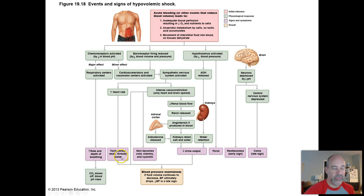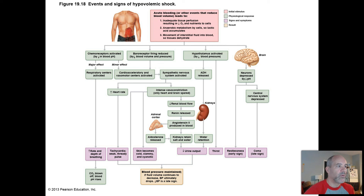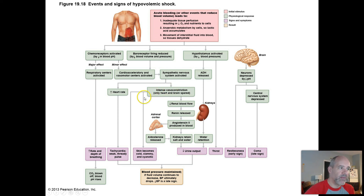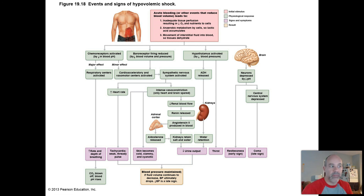You'd also observe a thready pulse because the heart rate is fast but you have a lowering blood volume. The sympathetic nervous system is going to tell peripheral blood vessels to constrict in order to increase peripheral resistance. This is going to occur throughout the body. Notice your heart and brain are spared — you can't decrease blood flow to those organs or you'll die anyway. One sign in a patient would be that the skin becomes cold and clammy because you have decreased blood flow to the skin surface while trying to conserve blood for the heart and brain.